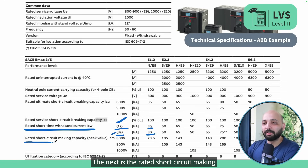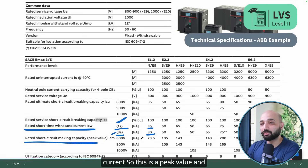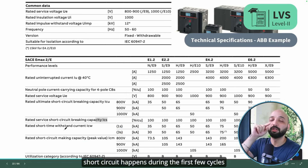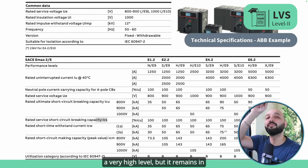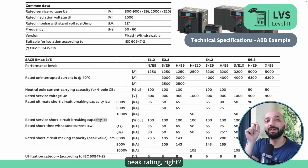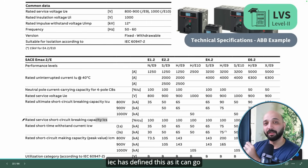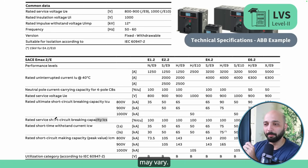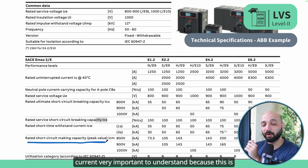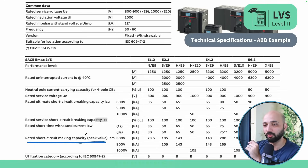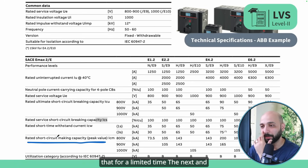The next is the rated short circuit making current, also referred to as the peak current — you will see 'p' mentioned in the ratings. Whenever a short circuit happens, during the first few cycles the current reaches a very high level but only for a very short time — it is a transient. IEC defines this as up to 2.5 times the rated short circuit current; at 60 Hz this value may vary. This is the peak value, different from the RMS value of the short circuit current, and the breaker must be able to carry it for that limited time.